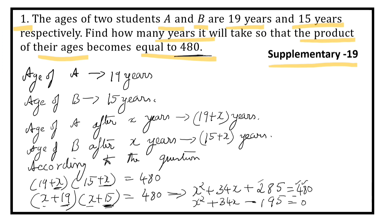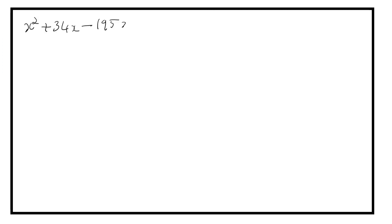The equation is X square plus 34X minus 195 is equal to 0. This is in the standard form. You can apply the factorization method or formula method. Now let us use the formula method. The formula is X equals minus B plus or minus square root of B square minus 4AC, upon 2A.